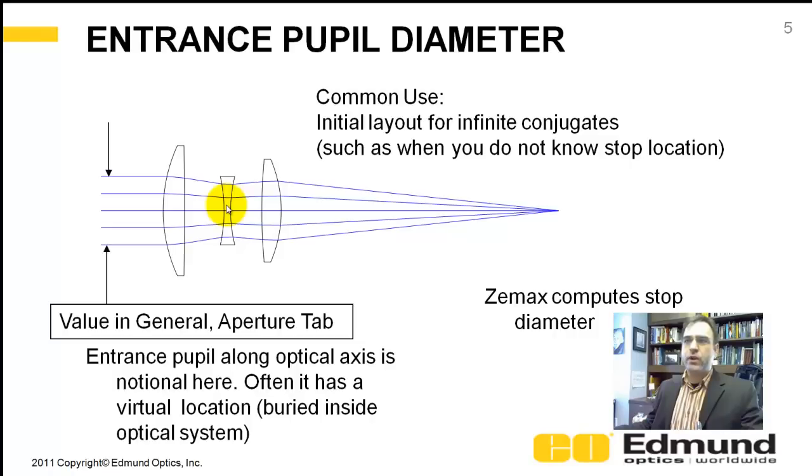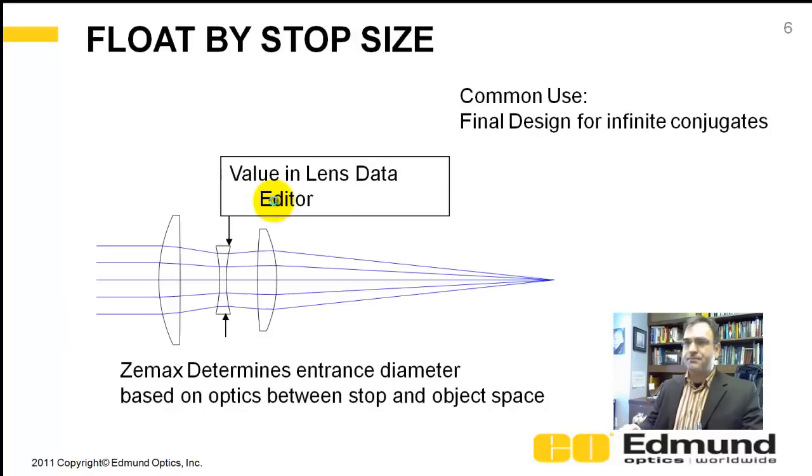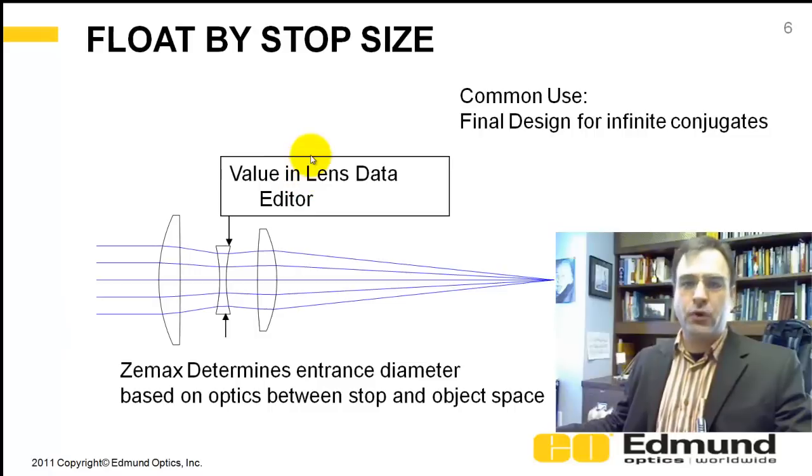This is used when you're initially laying out an imaging system with an infinite conjugate. You don't know where the aperture stop is. You don't know what size it is. You just want to specify the entrance pupil diameter as opposed to float by stop size.